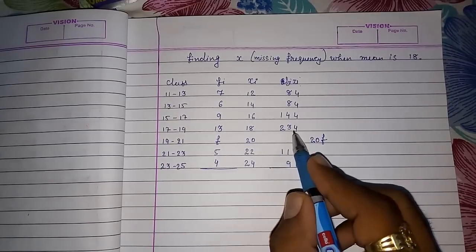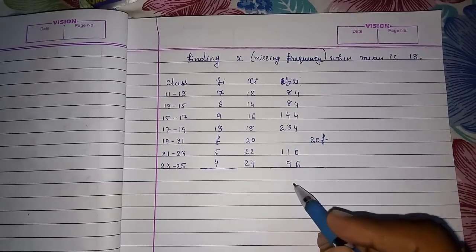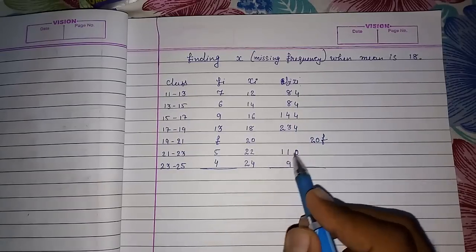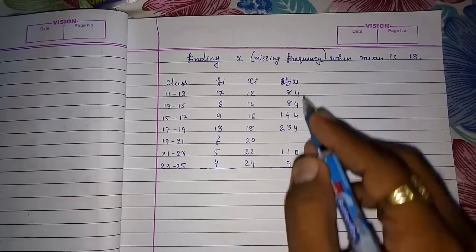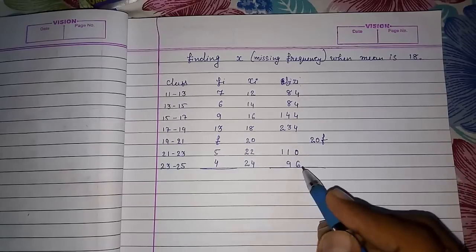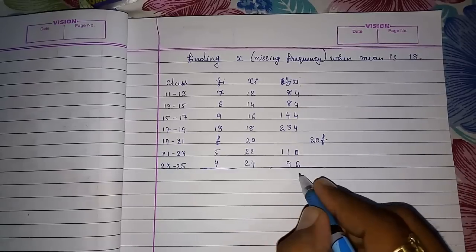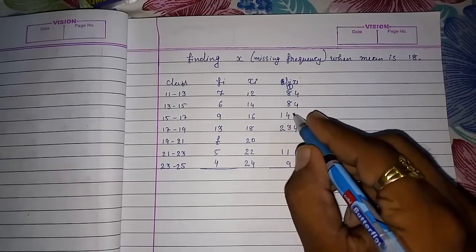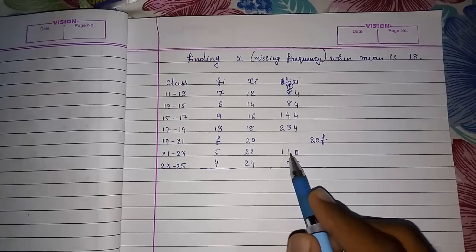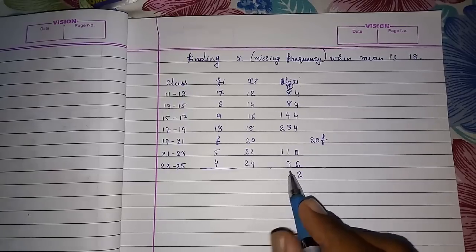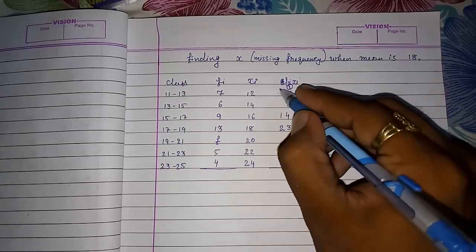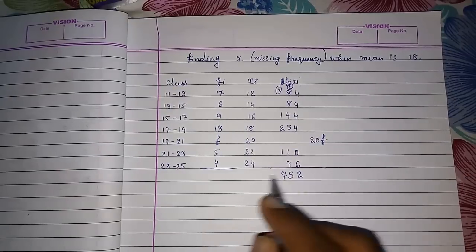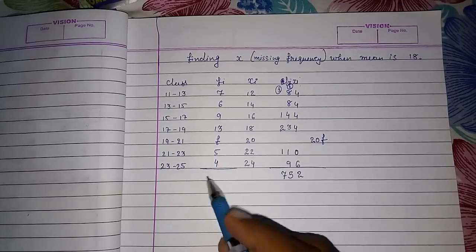Now we have to add this. If I will keep it here, by mistake there are chances that you add this 20 with this number, so we don't have to add this with this number. That's why I hadn't written it inside here. So now we have to add this number: 16 and 6 is 22 carry 2, 210, 18, 19, 20, 21, 22, 25, 26, and 35. So FI XI is 752.